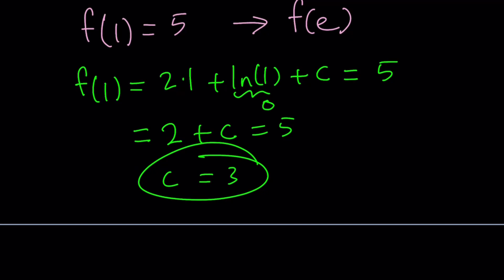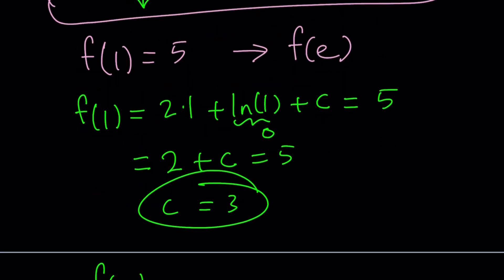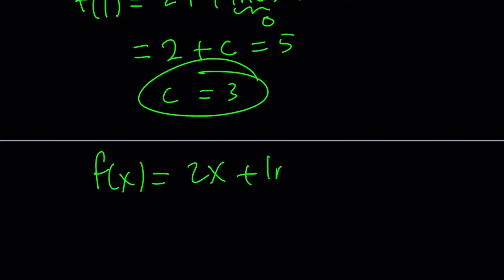Awesome. Now we got the value of c, which we can plug in to write f of x. f of x can be written as 2x plus ln absolute value of x plus c, which is 3.